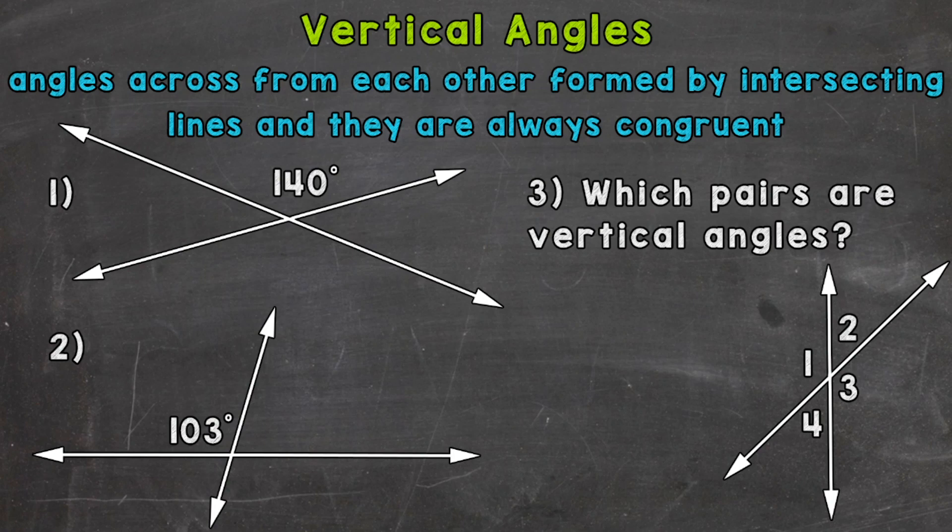Vertical angles are angles across from each other formed by intersecting lines and they are always congruent, meaning equal measure. We have a few examples here that we're going to go through together in order to better understand the basics of vertical angles.